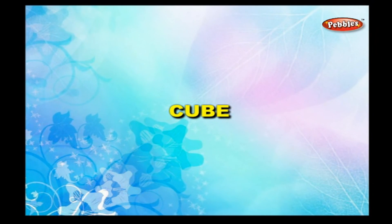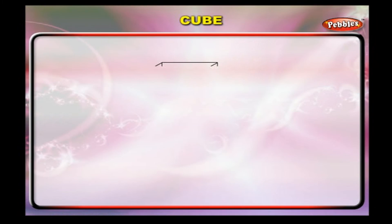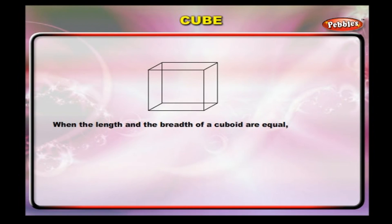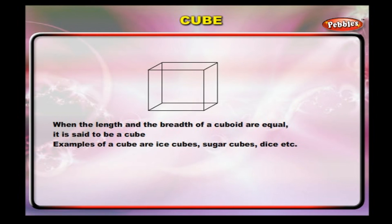Cube. When the length and the breadth of a cuboid are equal, it is said to be a cube. Examples of a cube are ice cubes, sugar cubes, dice, etc.